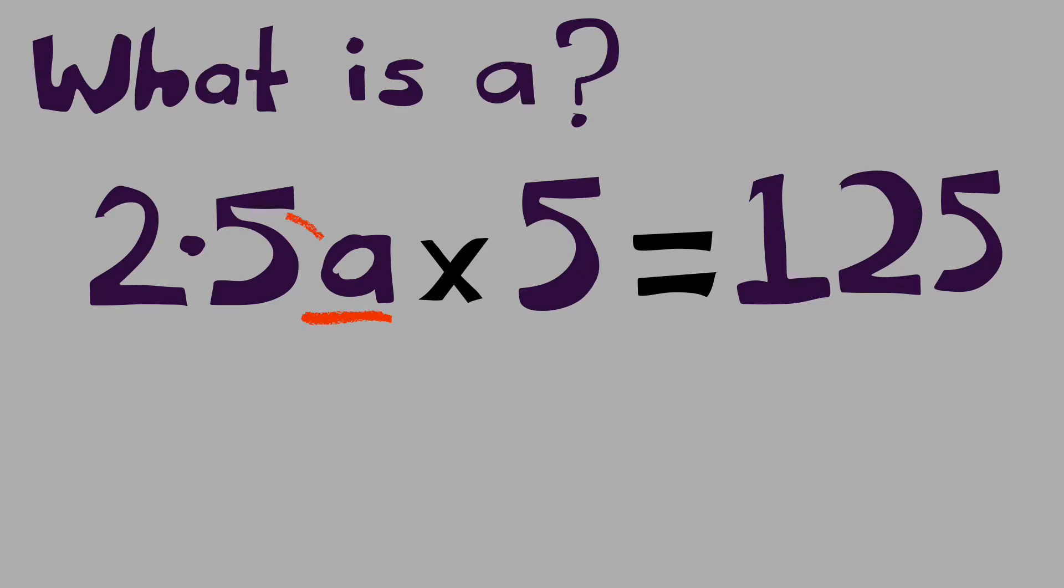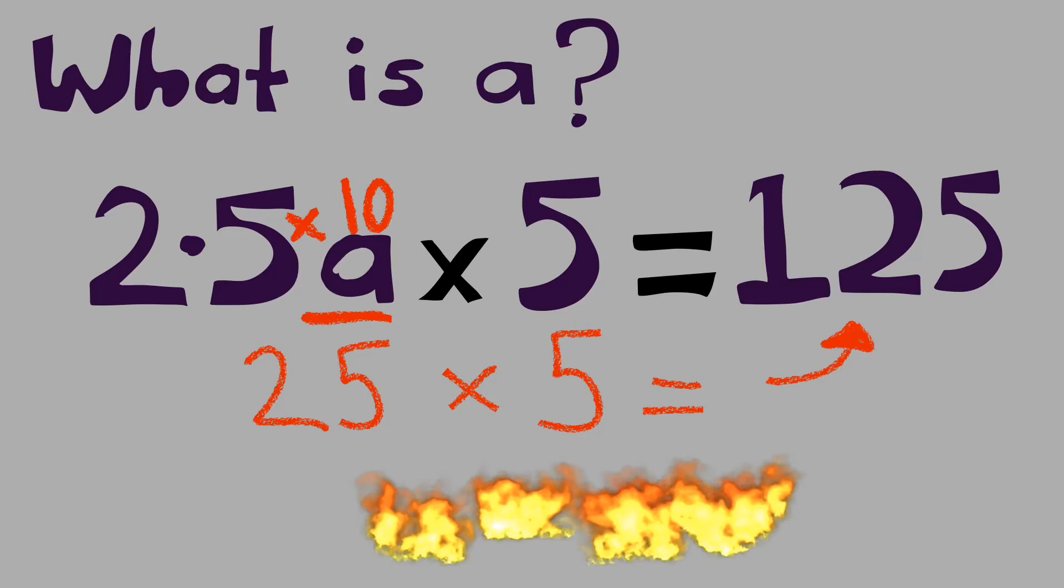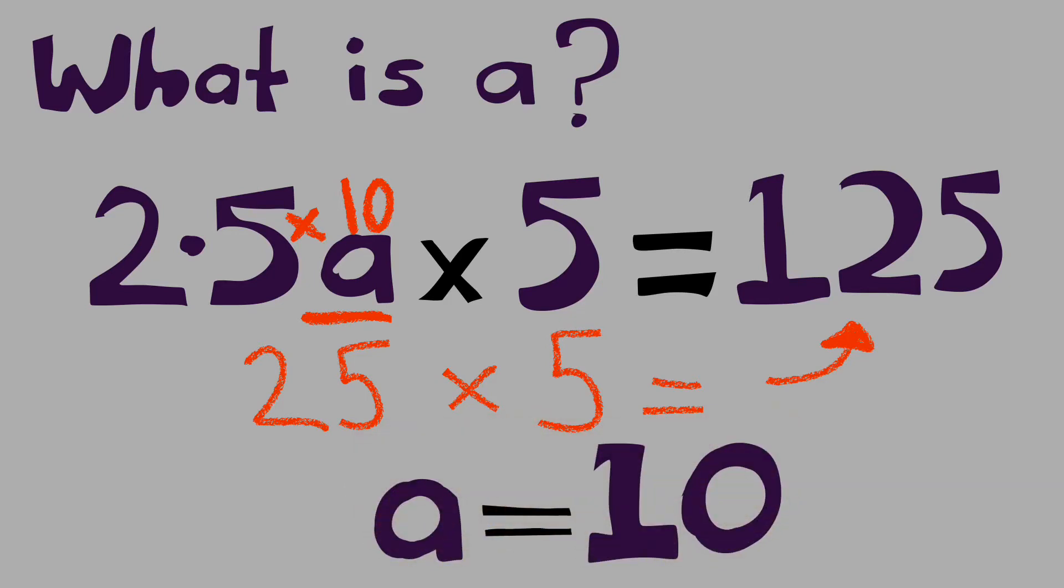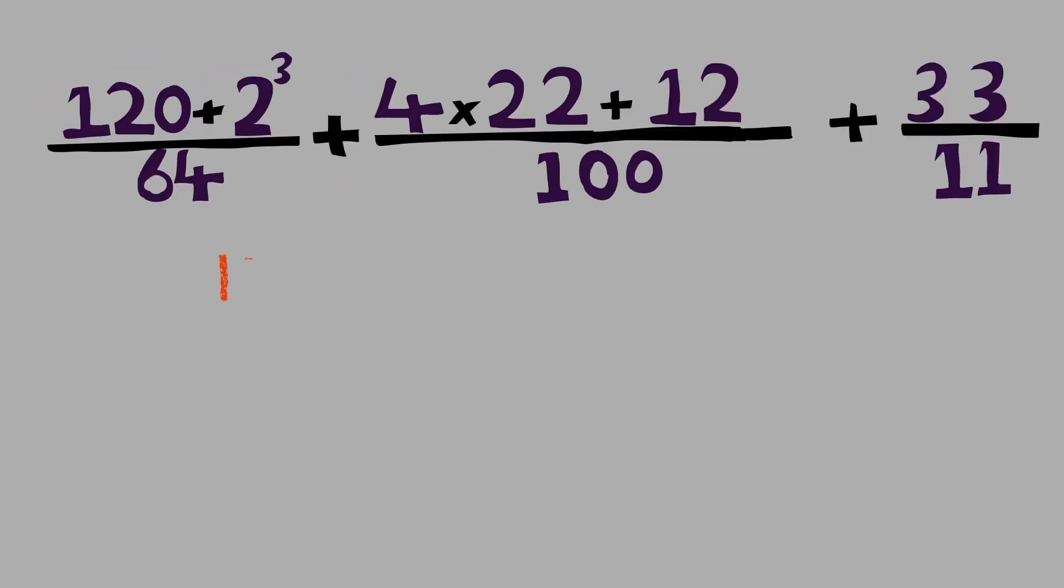What is a? 2.5a, and that automatically means multiplication in there, so 2.5 multiplied by 10 in this instance. That will equal 25. 25 times 5, that's going to equal 125. So a equals 10.